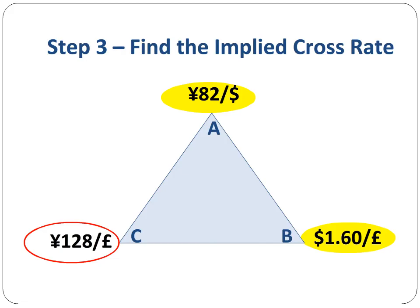In step 3, we find the implied cross rate using the other two quotes. So we multiply 82 yen per dollar by 1.6 dollars per pound to come up with the yen per pound implied cross rate.